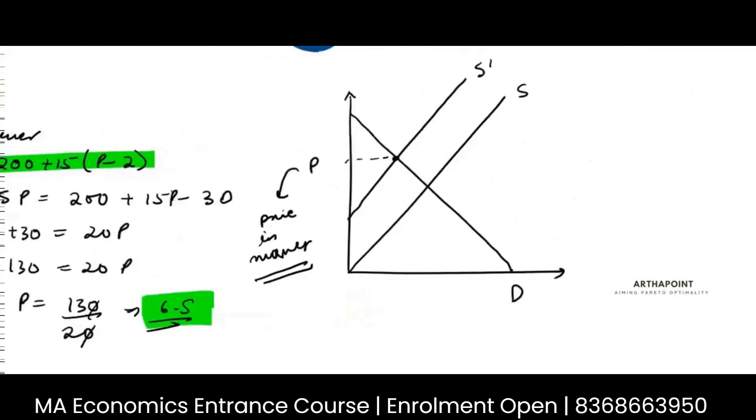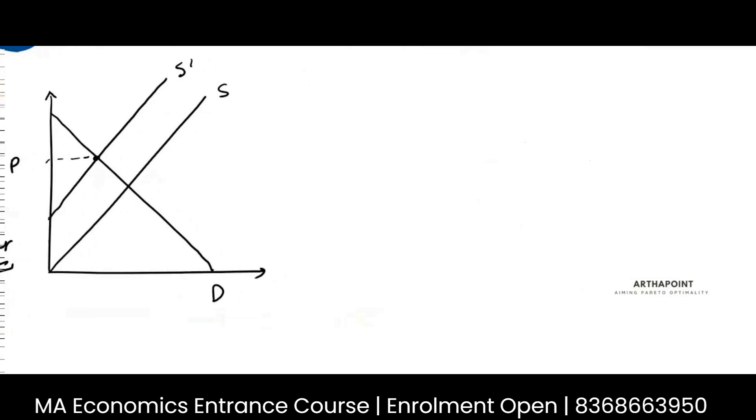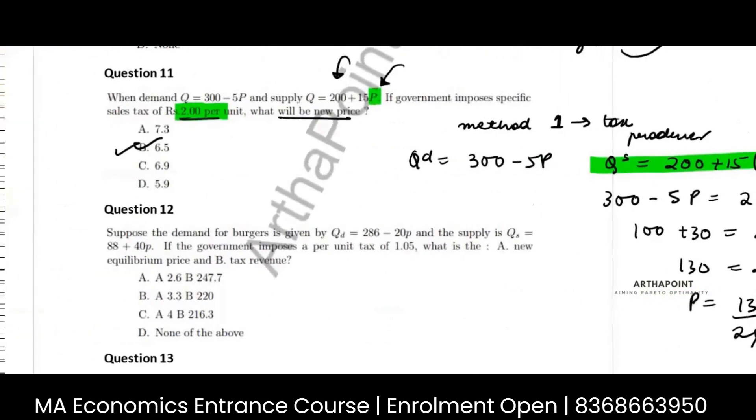Supposedly I would have instead put a tax on the consumer. Because of tax, consumer will pay more price. So whatever price consumer is paying till now, now I will add two more to it because tax has to be also paid on that good.